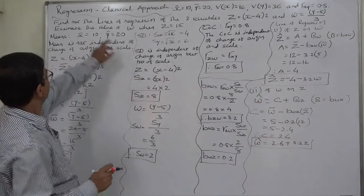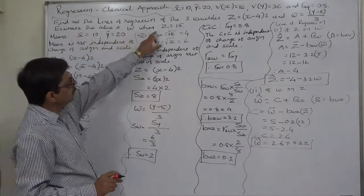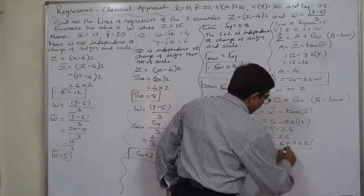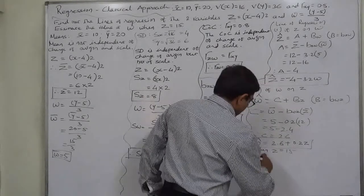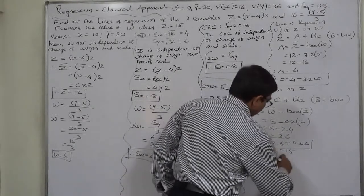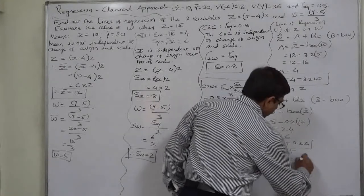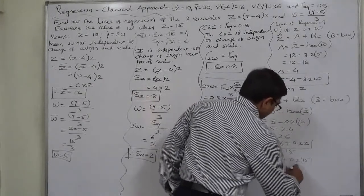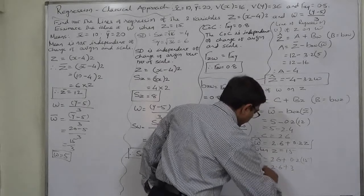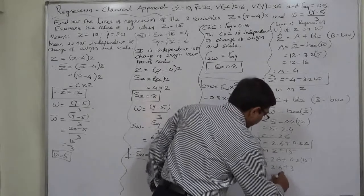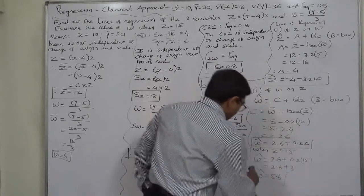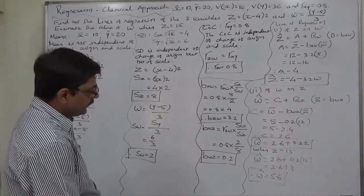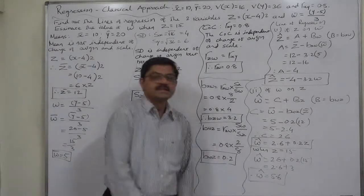The last part is to estimate the value of W when Z equals 15. Using the regression equation: W-hat = 2.6 plus 0.2 times 15 = 2.6 plus 3 = 5.6. So the estimated value of W when Z equals 15 is 5.6.